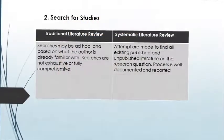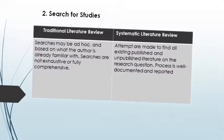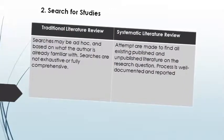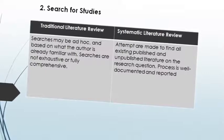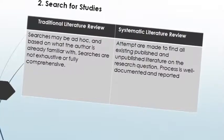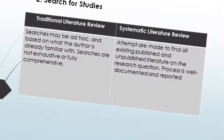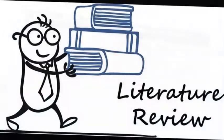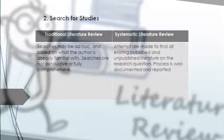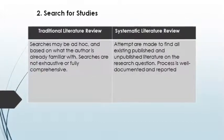The second difference is the search for studies. In a traditional literature review, the search may be ad hoc and based on what the author is already familiar with — searches are not exhaustive or fully comprehensive. In contrast, a systematic literature review attempts to find all existing published and unpublished literature on the research question, and the process is well documented and reported.